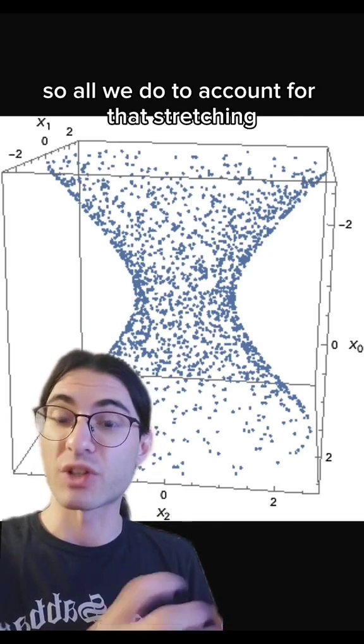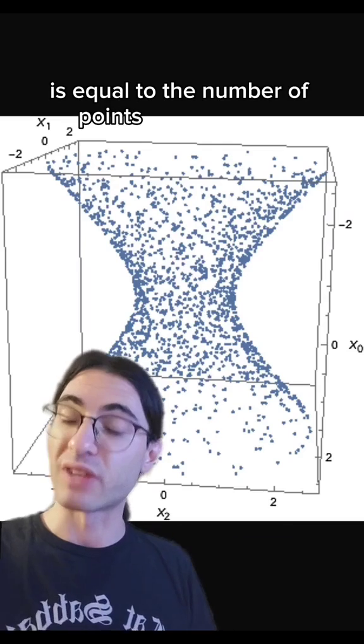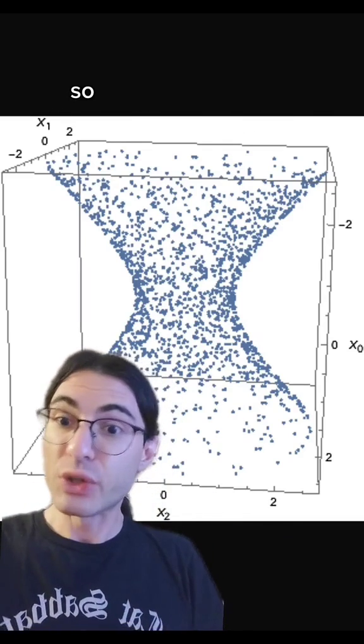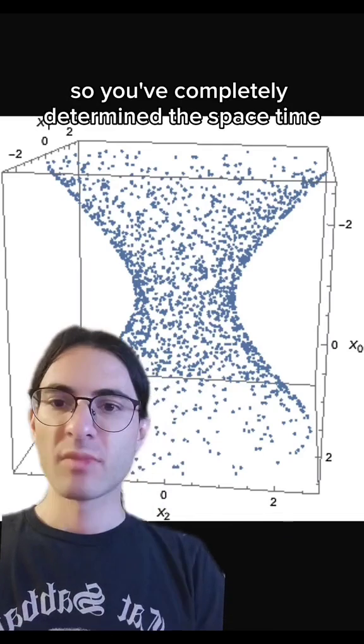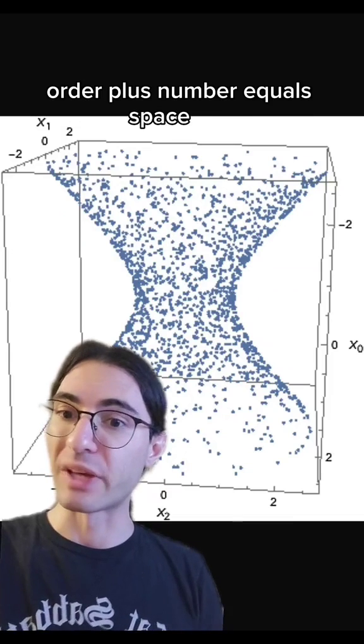So all we do to account for that stretching or shrinking is we just say the volume of a region is equal to the number of points in that region. And now you've basically normalized the stretching and shrinking, so you've completely determined the spacetime. This is encapsulated by the causal set theory slogan, order plus number equals spacetime.